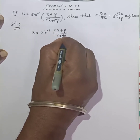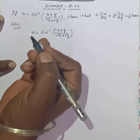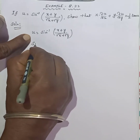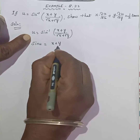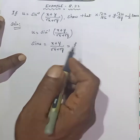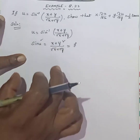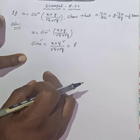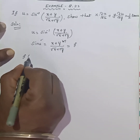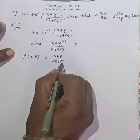Given u equals sin inverse of (x plus y) divided by (root x plus root y), we write sin(u) equals (x plus y) divided by (root x plus root y). So we define f(x, y) equal to (x plus y) divided by (root x plus root y). We need to find the degree to confirm it is homogeneous.